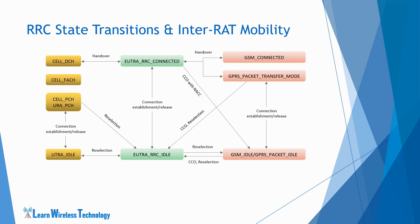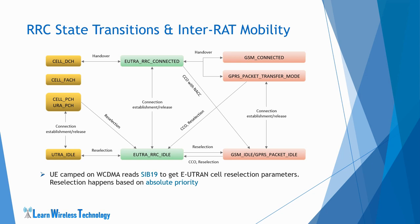When the UE is camped on another RAT such as WCDMA or GSM, it performs cell reselection to LTE in idle state. The UE needs to know the carrier frequencies of neighboring LTE cells to perform measurements. When the UE is camped on WCDMA and is in UTRA idle, URA PCH, Cell PCH or Cell FACH state, it performs cell reselection from UTRA to EUTRA. The UE reads the SIB-19 message to get the EUTRA cell reselection parameters, and based on absolute priority given in SIB-19 or by dedicated signaling message, cell reselection is performed.